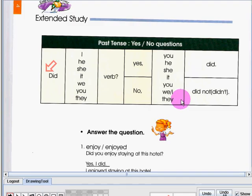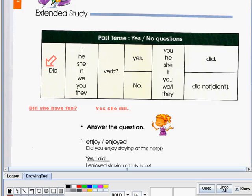Now I'm going to give you an example question and a response that is in the past tense and is a yes or no question. Here's my sample question and answer. Did she have fun? Yes, she did. So have is a verb. You can use that.